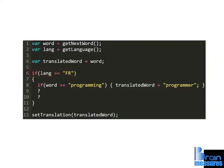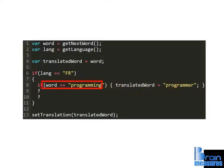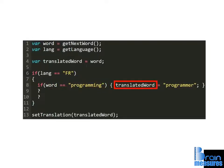Before we move on, notice that there's already one nested if statement. This one checks if the variable word is equal to programming. If this is true, we assign translated_word the French word for programming.